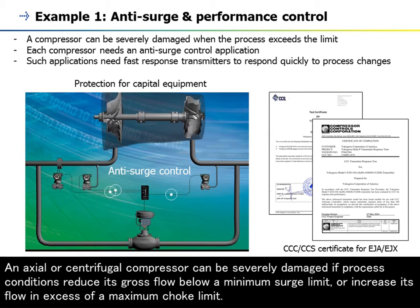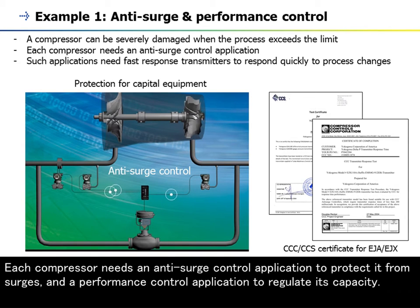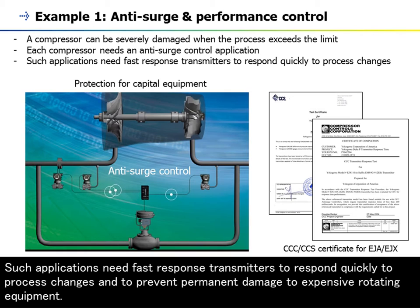An axial or centrifugal compressor can be severely damaged if process conditions reduce its gross flow below a minimum surge limit, or increase its flow in excess of a maximum choke limit. Each compressor needs an anti-surge control application to protect it from surges, and a performance control application to regulate its capacity. Such applications need fast response transmitters to respond quickly to process changes and to prevent permanent damage to expensive rotating equipment.